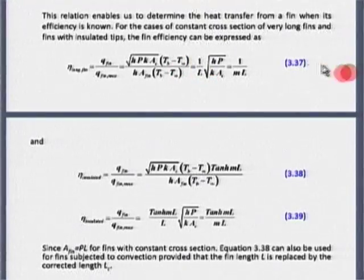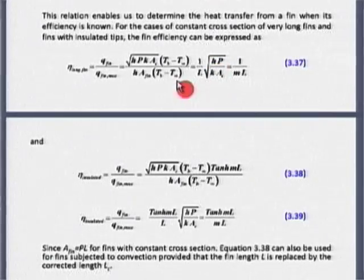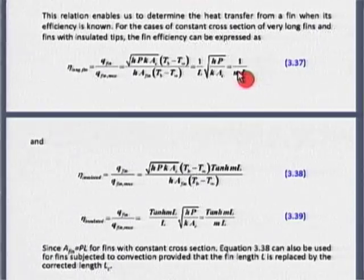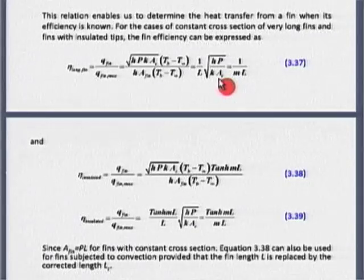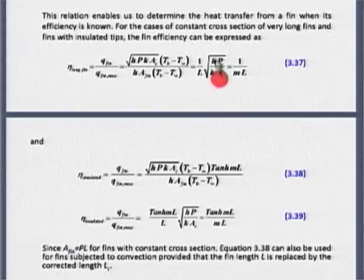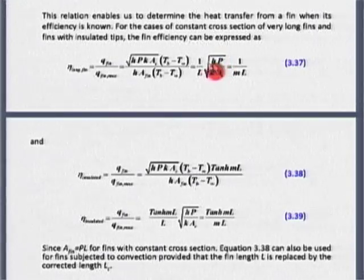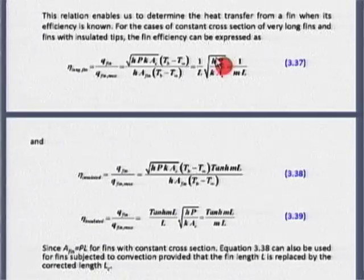A correction has been noted: in equation 3.37, Q_fin / Q_fin_max written as 1/(mL) is correct, but the term before that should be (1/L)×√(kAc/hP) — it has been incorrectly typed as √(kAc/kAc). Please make that change: equation 3.37 — 1/(mL) is correct, but the preceding term is (1/L)×√(kAc/hP).